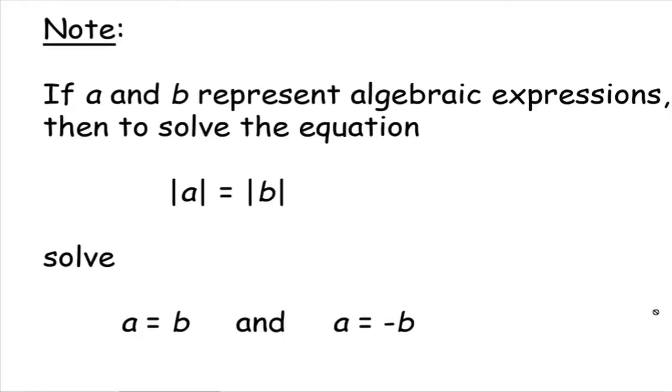Say a and b are algebraic expressions, like 2x plus 5. To solve the absolute value of a equals the absolute value of b, we solve two equations: first, a equals b, because if those two things are equal, their absolute values are certainly equal. Second, a equals the opposite of b, because if that's true, the absolute values would also be equal.